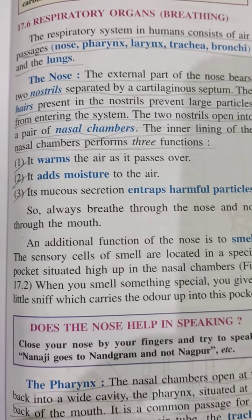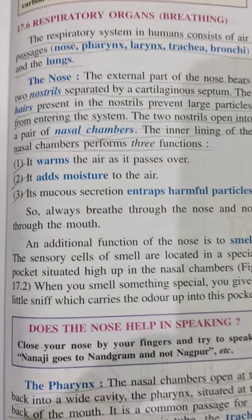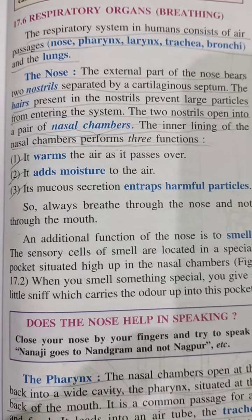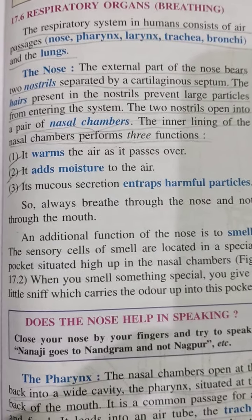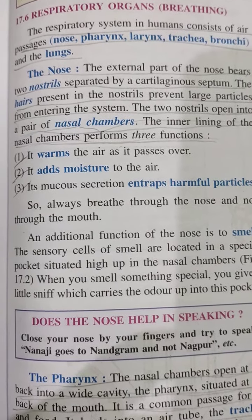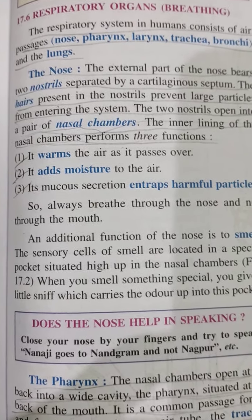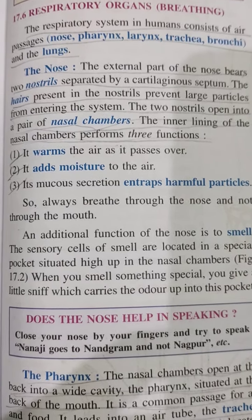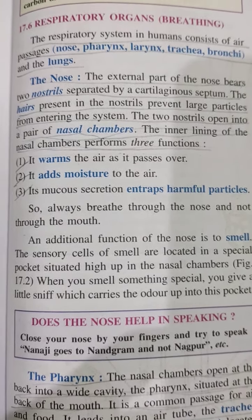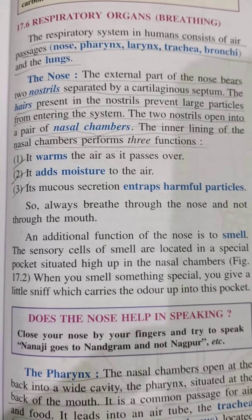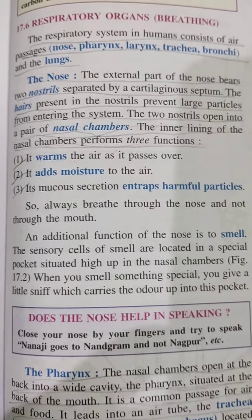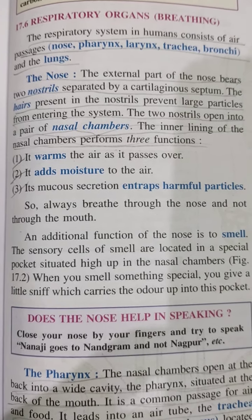The nose has an external part with two nostrils separated by a cartilaginous septum. The hairs in the nostrils prevent large particles from entering the system. The two nostrils open into a pair of nasal chambers whose inner lining has three functions: it warms the air, adds moisture to the air, and its mucus secretion entraps harmful particles. So always breathe through the nose. An additional function is to smell.